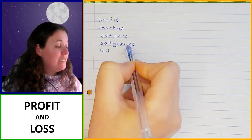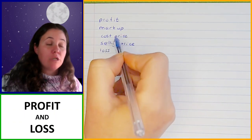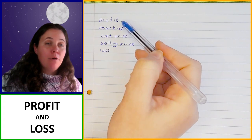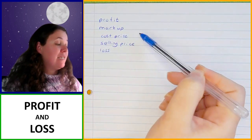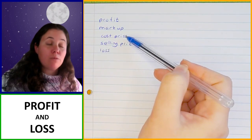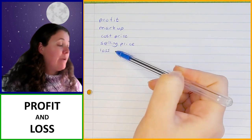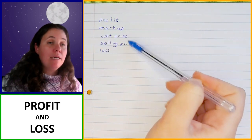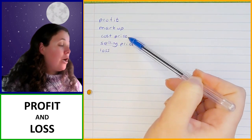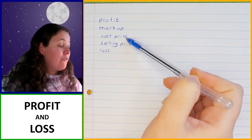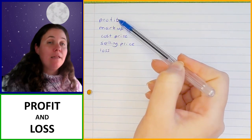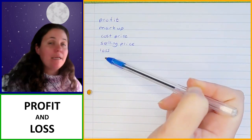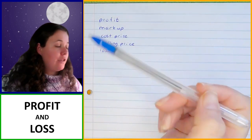So if your selling price is more than the cost price, then you make a profit. If your selling price is less than your cost price, then you make a loss. The selling price and the cost price — if you subtract them from each other, you will get either the profit or the loss depending on which one is higher than the other.